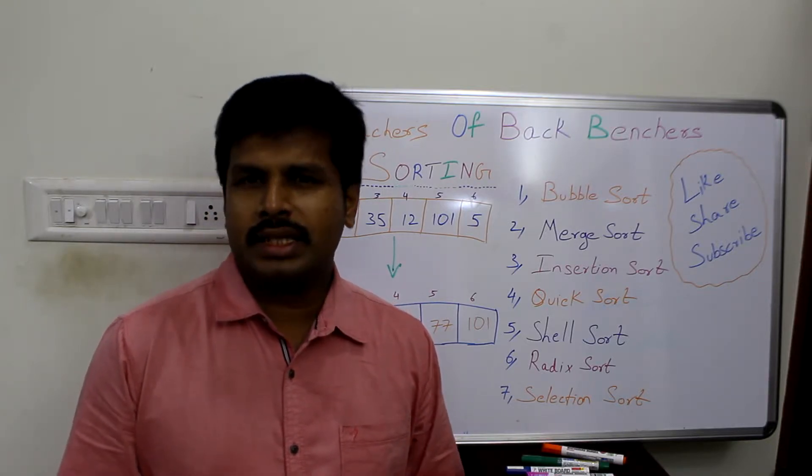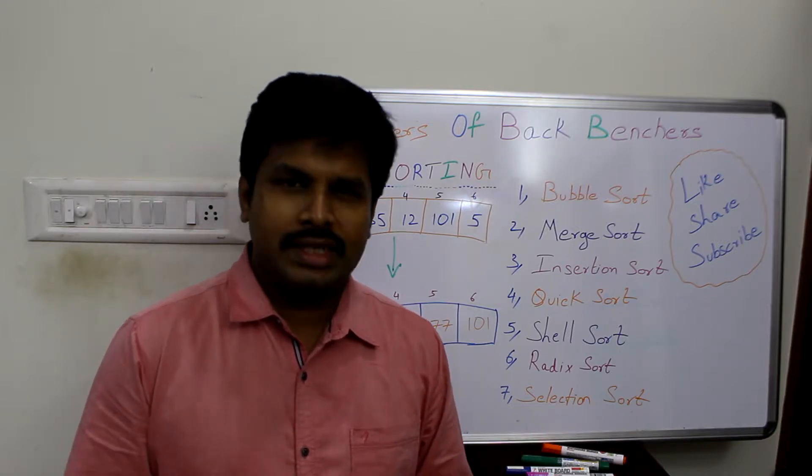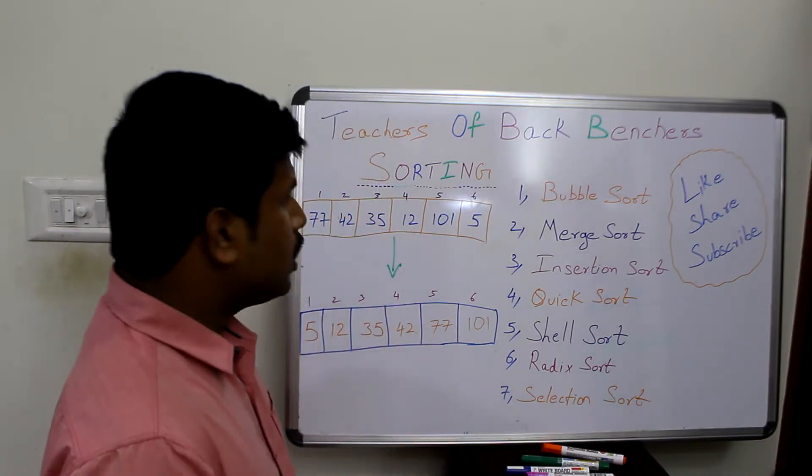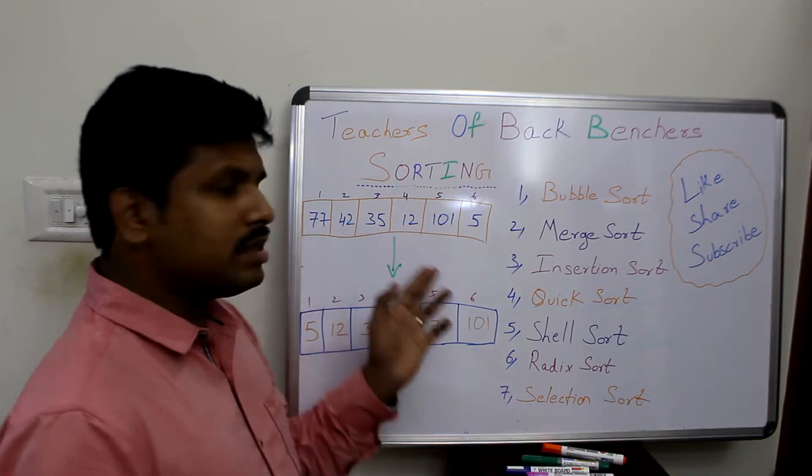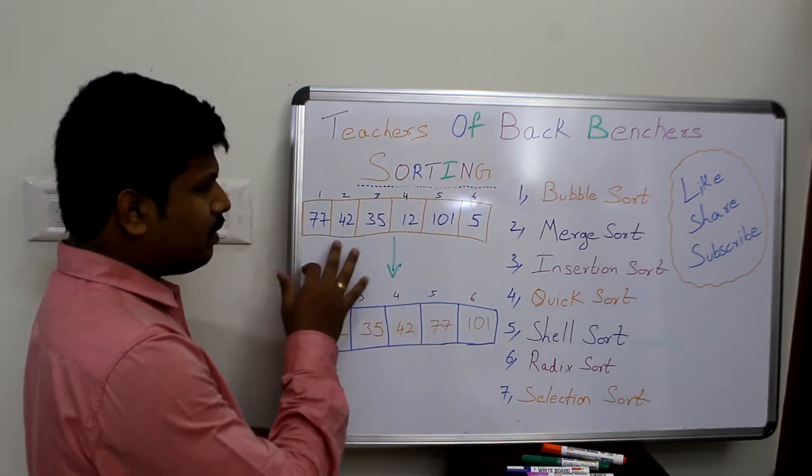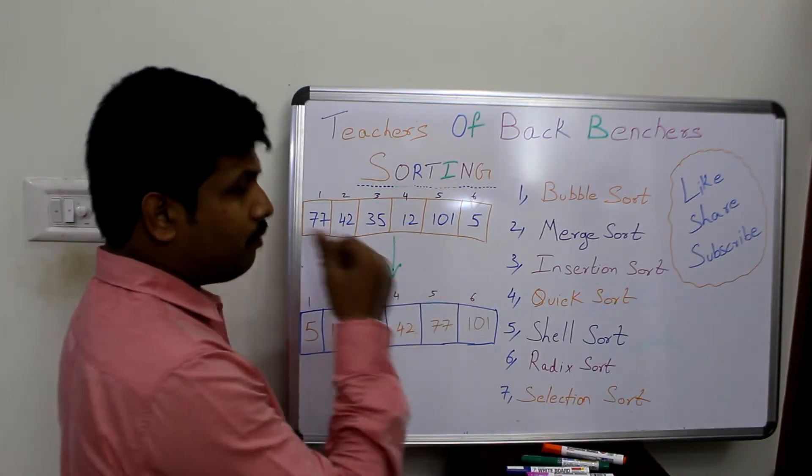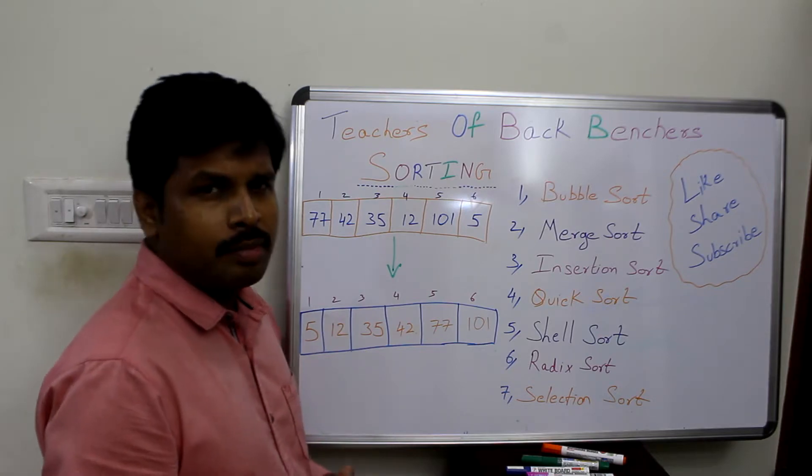There are two types of techniques where we can sort the series: one is in ascending order and one is in descending order. Let's assume that this is the given series: 77, 42, 35, 12, 10, 15. These six numbers are jumbled together.